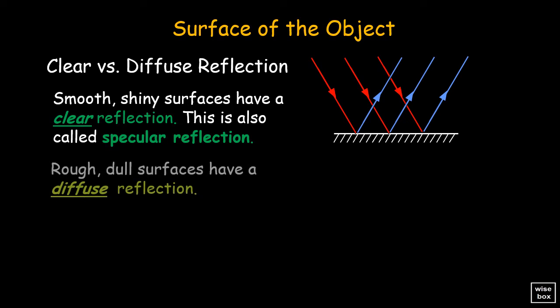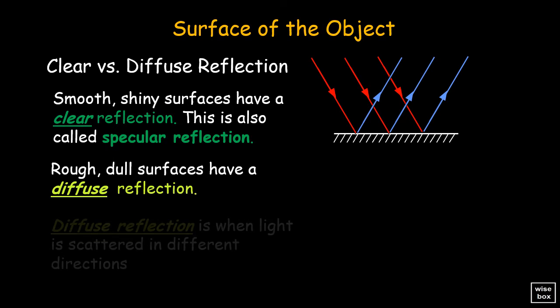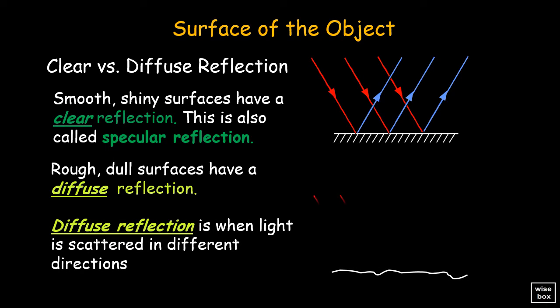While rough, dull surfaces have a diffuse reflection. Diffuse reflection is when light is scattered in different directions.